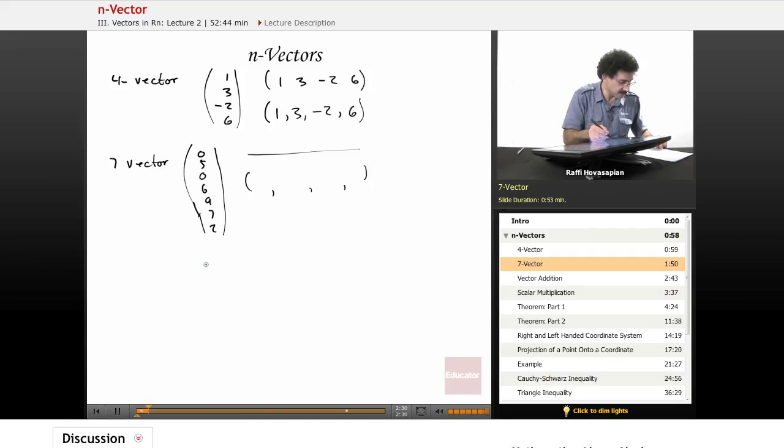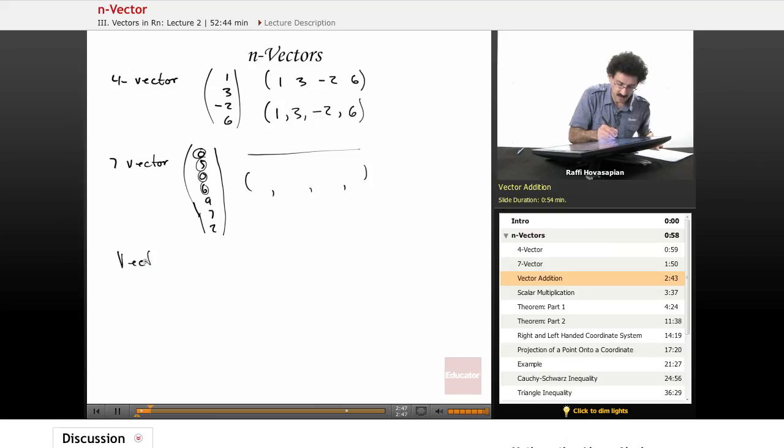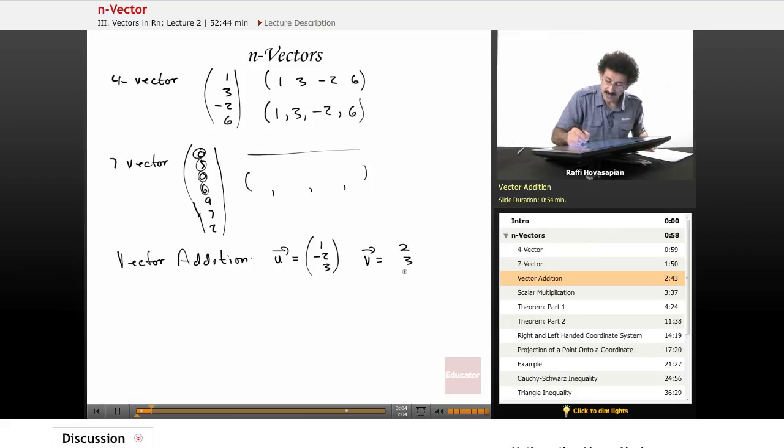Okay, let's talk about vector addition. Last time we talked about vector addition when we said when you add two vectors together, you're just adding the individual components. In other words, the individual numbers of those vectors together. So let's just do an example. Let's say vector addition, let's do a three vector. So we have one, minus two, and three. And let's take V as two, three, and negative three. So when we add them, we're just adding the one and the two, the negative two and the three, the three and the negative three.